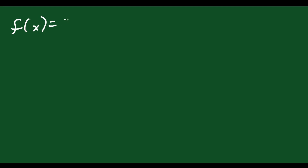So we've learned how to graph the sine and cosine functions, but we haven't talked about tan. We haven't talked about f of x equals tan of x, what this looks like, and there's a reason for that. It's because it looks completely different from sine and cosine. Sine and cosine look pretty similar to one another, but the tangent function looks completely different.